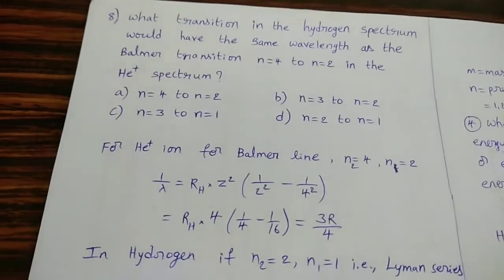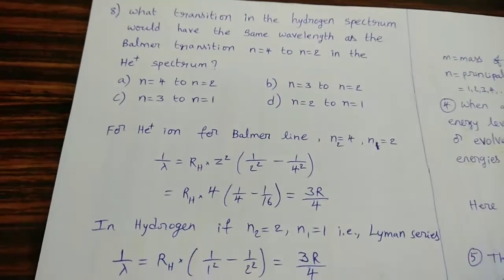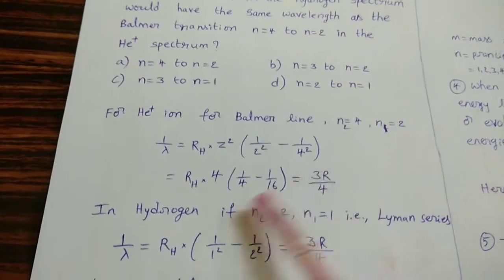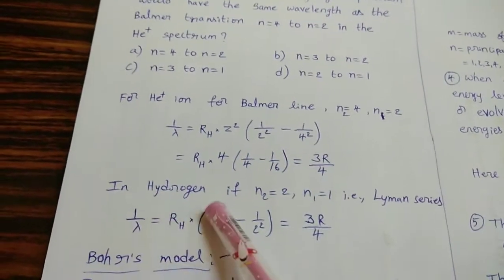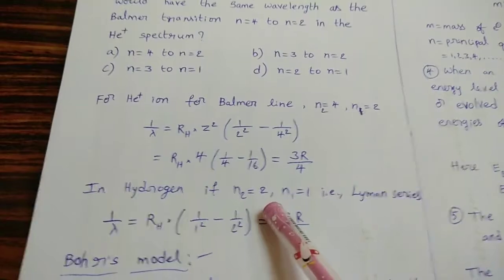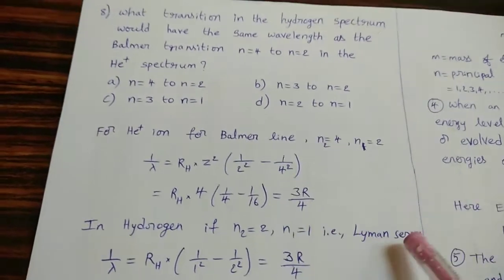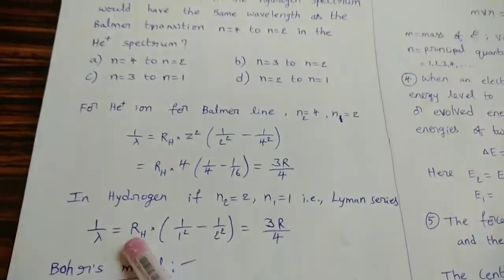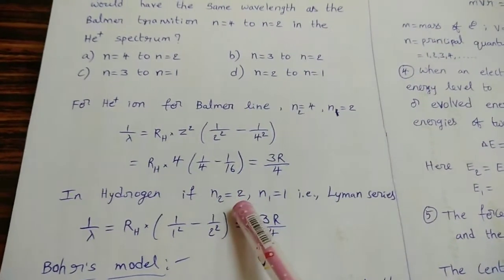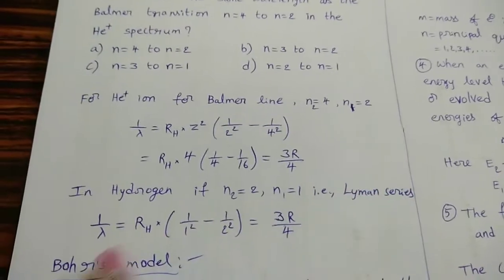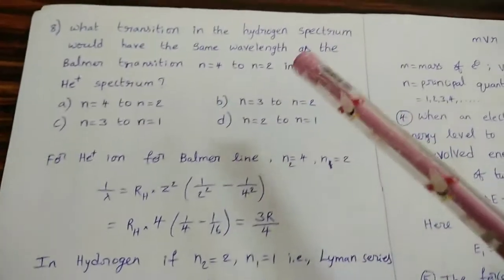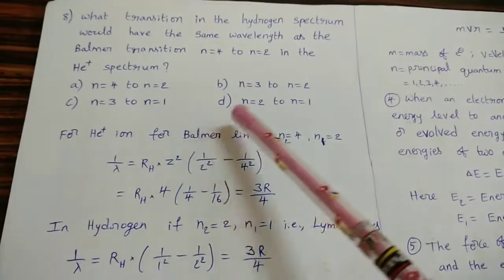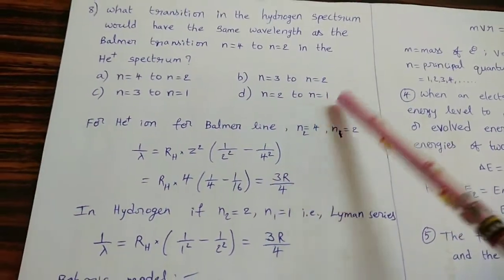Substituting the values we get (1/N₁² - 1/N₂²). In hydrogen, if N₂ = 2 and N₁ = 1, that is the Lyman series. Considering the fourth option with N₂ = 2 and N₁ = 1 (Lyman series), we can verify this matches. This type of question generally uses a hit-and-trial method. The suitable option is D.